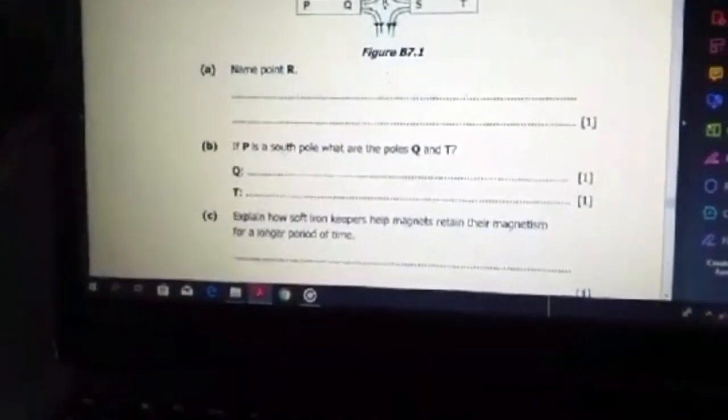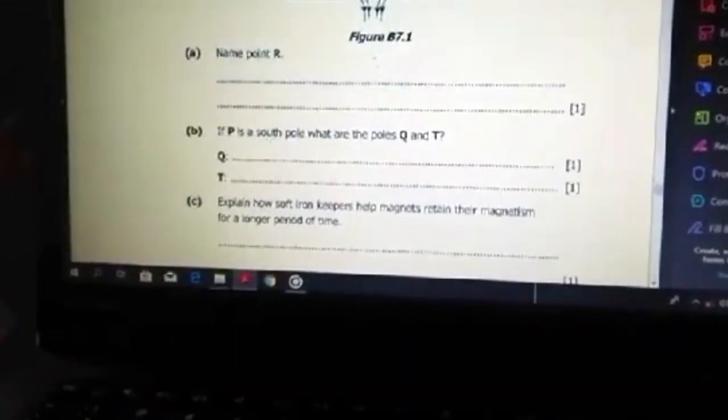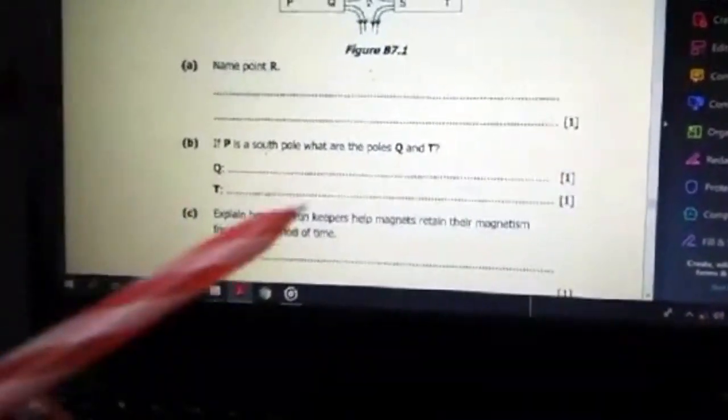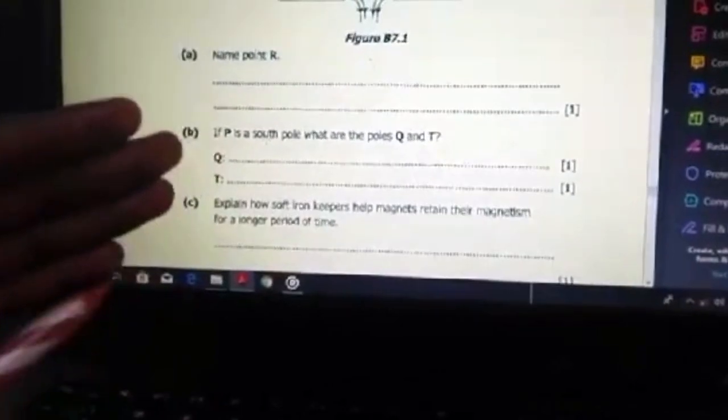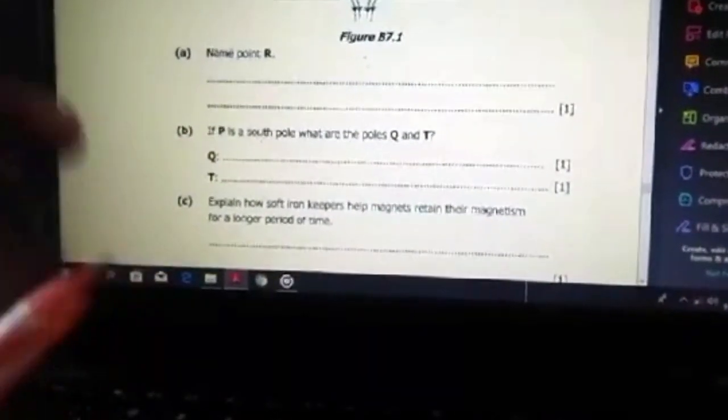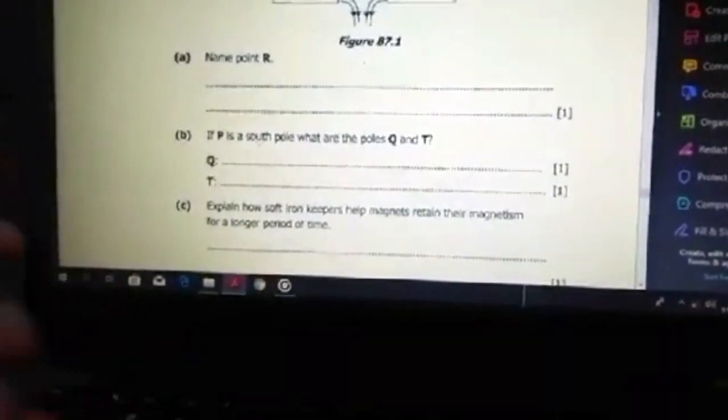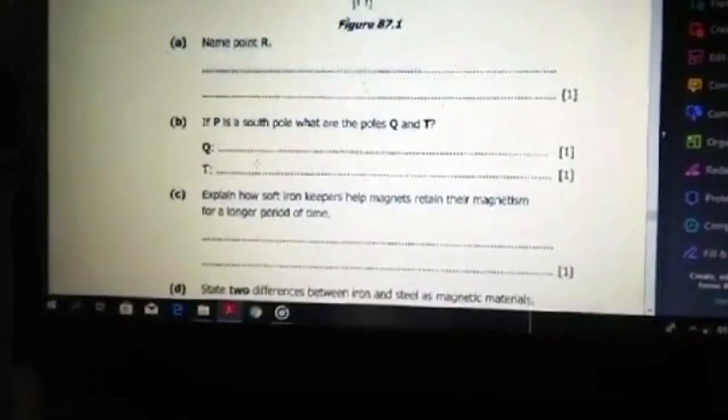Soft iron keepers help magnets retain their magnetism for a longer period because they preserve the strength of the magnet by completing their magnetic circuit. They are more important to those magnets with low coercivities. The explanation is just by preserving the strength of the magnet by completing the magnetic circuit so that the field lines are not disturbed.